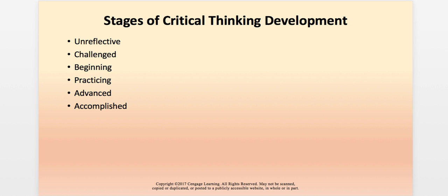Paul and Elder describe six stages of critical thinking development. First, the unreflective stage, where we really lack awareness of thinking problems. We become challenged when we're aware of thinking problems but don't do anything to improve them. In the beginning phase, there are periodic attempts to improve thinking quality. In the practicing stage, we make regular efforts to improve. In the advanced stage, we have made noticeable improvements as efforts become more systematic. And in the accomplished stage, skillful thinking is second nature — we don't even have to think about thinking critically; we just do it more or less automatically.